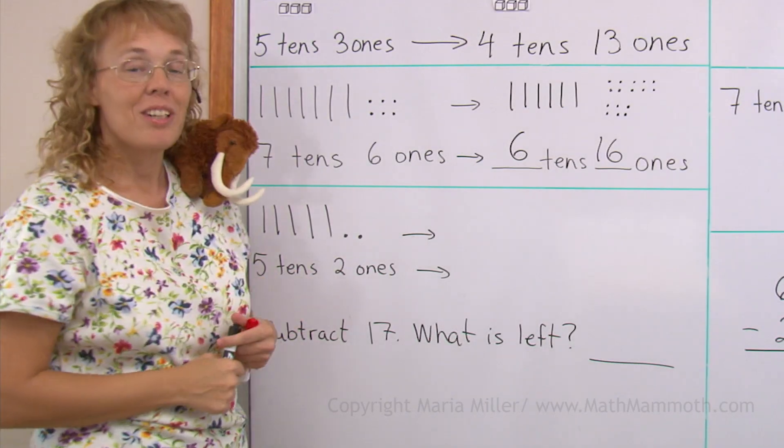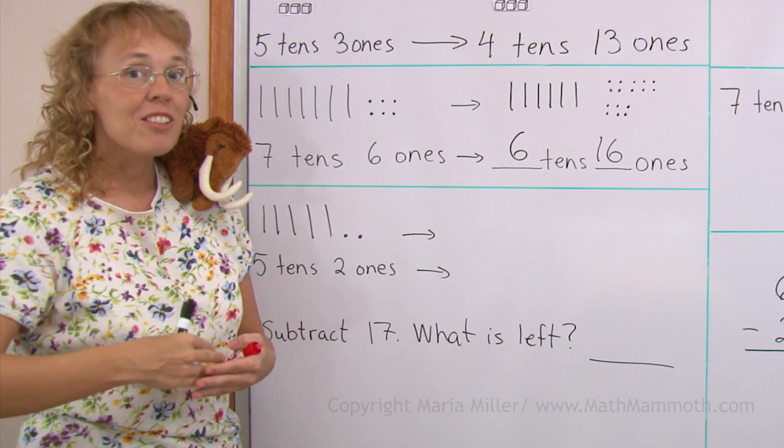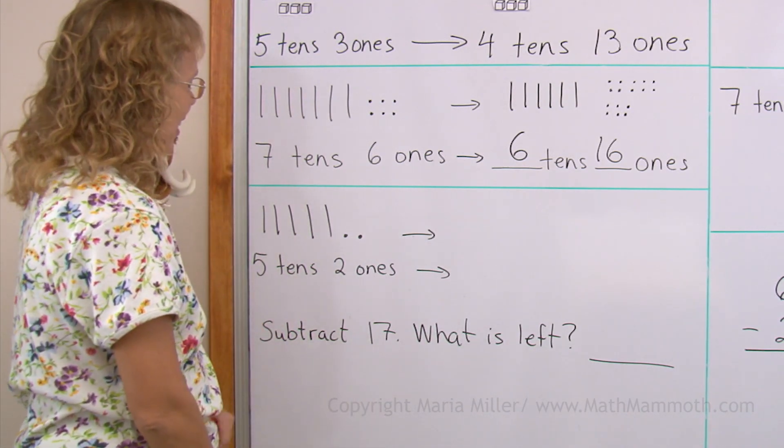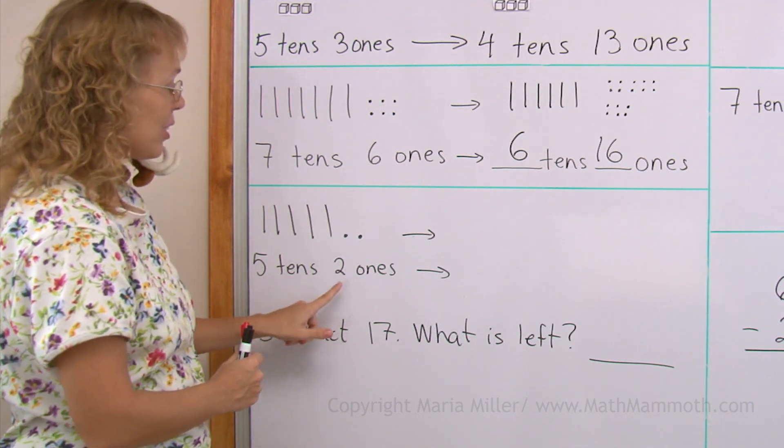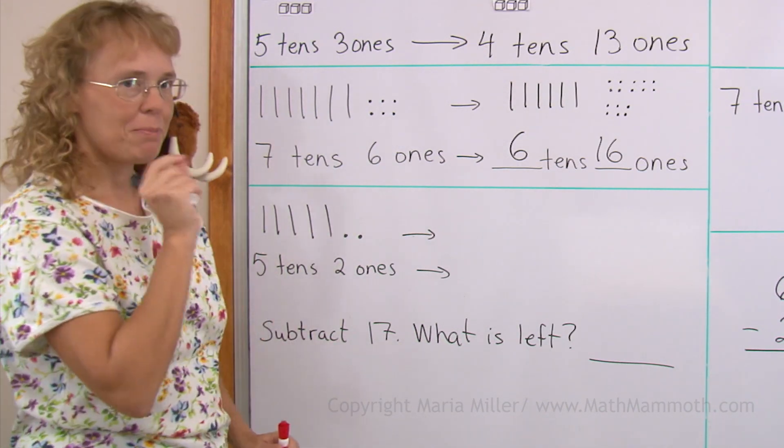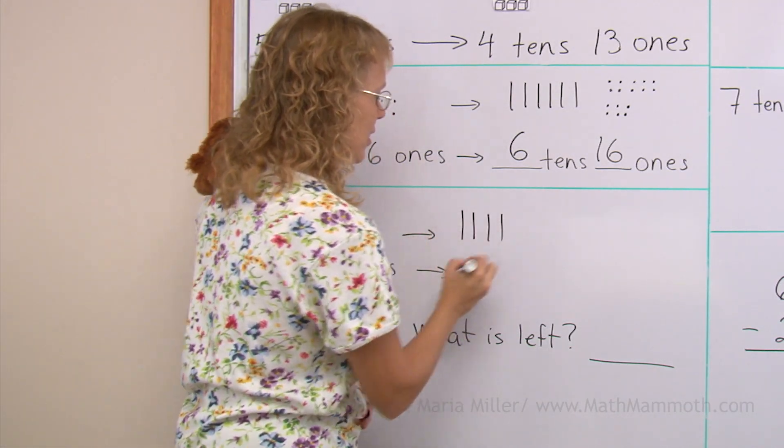Let's do it once more and now this time we will also subtract. After regrouping we will subtract seventeen. First we have five tens, two ones. I will take one of those tens and break it down. So I will only have four tens over here, right?